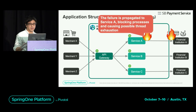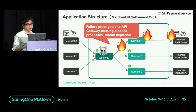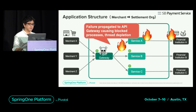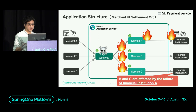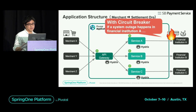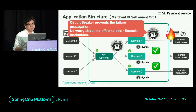Furthermore, if such a situation continues, the failure will propagate to the API Gateway, and processing blocks and thread exhaustion will occur, leading to service termination. As a result, financial institutions B and C can be affected by bad behavior from financial institution A. If a circuit breaker is used, even if a failure occurs in a specific financial institution, the failure is isolated and will not propagate — so there is no worry about affecting other financial institutions. In this way, the circuit breaker realizes applications with excellent fault tolerance.